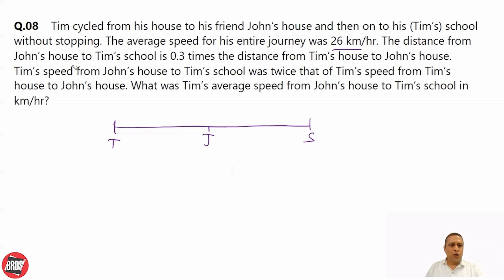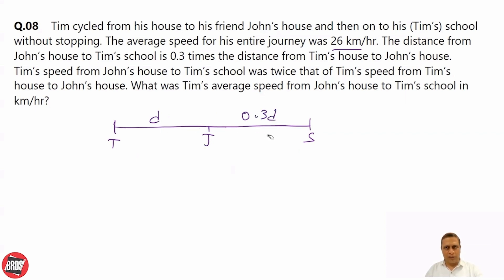The distance from John's house to Tim's school is 0.3 times the distance from Tim's house to John's house. So if the first distance is D, then this second distance is 0.3D.